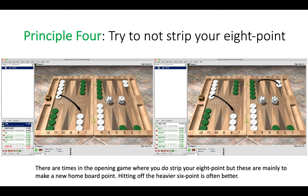Or even moving the two back checkers up, which is quite borderline. And on the right again, it's better to not hit. Now there are times of course in the opening game where you do strip your eight point, but these are mainly to make a new home board point. Often hitting off a heavier six point is better because it's a more efficient use of a stack of checkers on your six point.